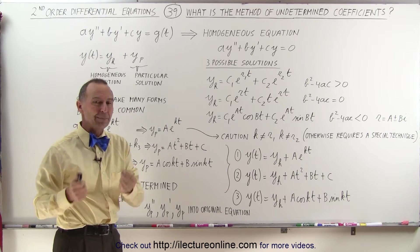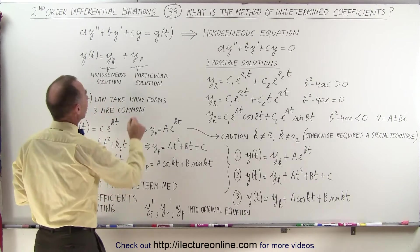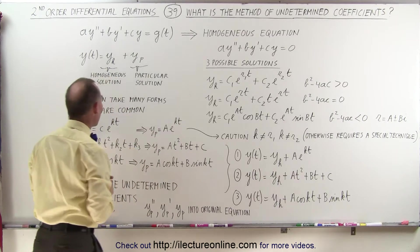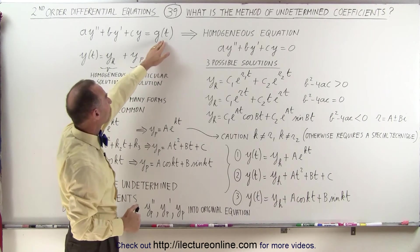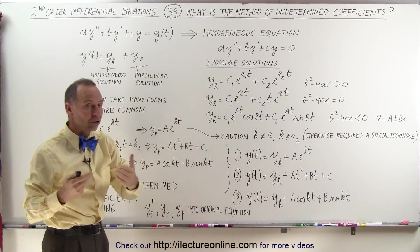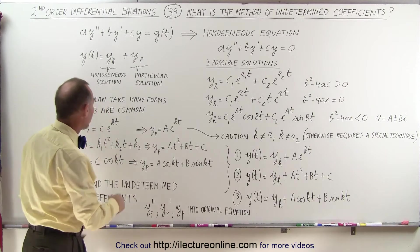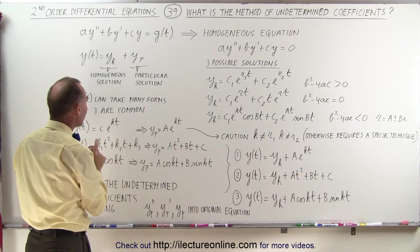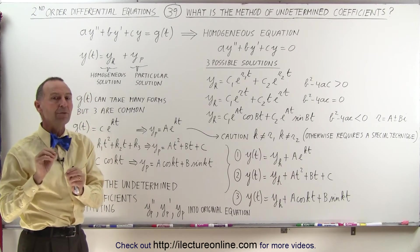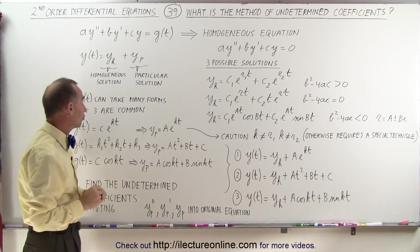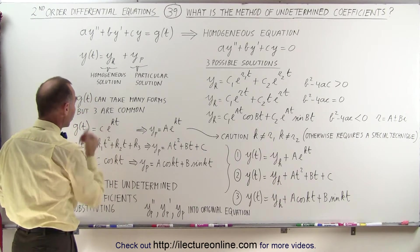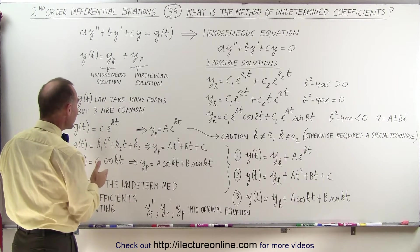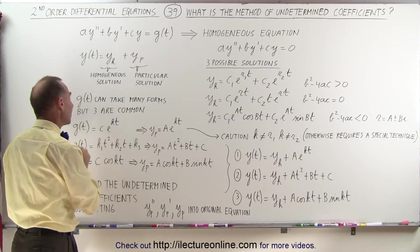Then we need to find the particular solution — the solution when we don't let this equal zero. We're going to take a look at this function and see what it looks like. That function can take on many different forms, but there are three very common forms: it can be an exponential function, a polynomial, or a trigonometric function.